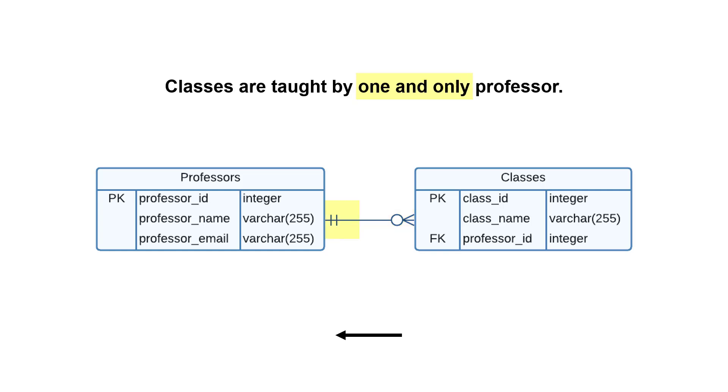Now, if we read this in the other direction, what we say is that classes are taught by one and only one professor. That's what the notation on the left means. So it shows us the relationship between these entities or tables.